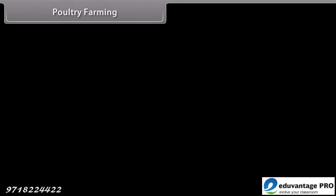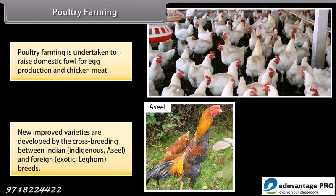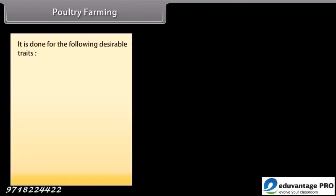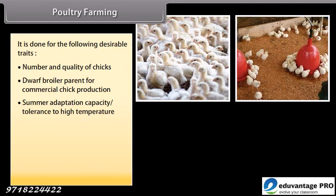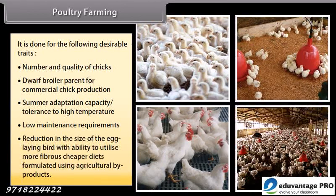Poultry farming is undertaken to raise domestic fowl for egg production and chicken meat. New improved varieties are developed by cross-breeding between Indian indigenous breeds such as Aseel and foreign exotic breeds such as Leghorn. This is done for the following desirable traits: number and quality of chicks, dwarf broiler parent for commercial chick production, summer adaptation capacity, tolerance to high temperature, low maintenance requirements, reduction in the size of the egg-laying bird with ability to utilize more fibrous cheaper diets formulated using agricultural by-products.